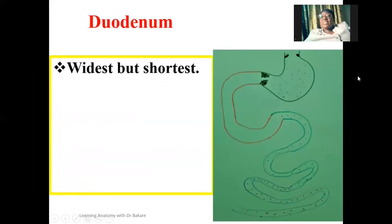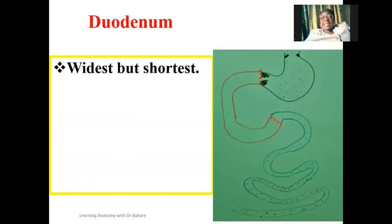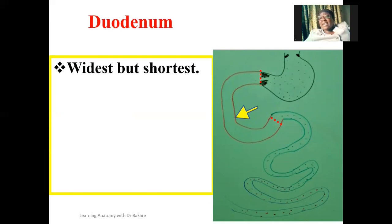Going further on the duodenum — out of all the three sub-regions of the small intestine, the duodenum is the widest in terms of caliber. When you take the diameter of the small intestine, you see that it is the widest when compared with the jejunum and the ileum. In terms of length, however, it is the shortest. The entire length of the small intestine is about 6.5 meters, and just 25 centimeters of this length is where the duodenum represents.